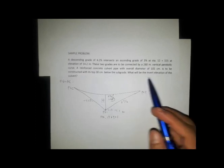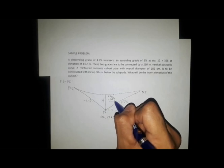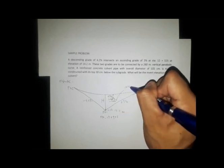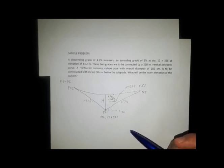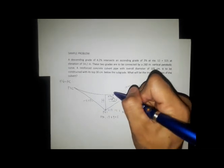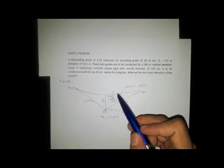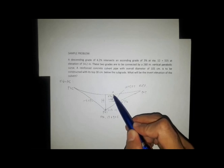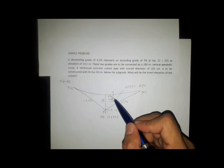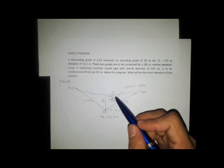The culvert has a diameter of 1.05 meters and is placed 0.3 meters below the subgrade. We need to find the invert elevation — that is, the bottom elevation of the culvert pipe. To find the invert elevation, we first find the elevation of the lowest point A, then subtract the depth of cover and the diameter of the pipe culvert.